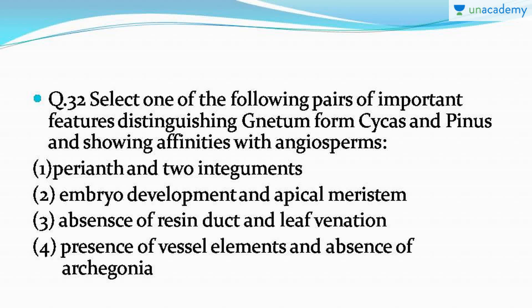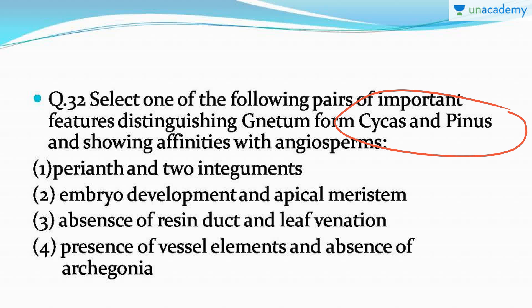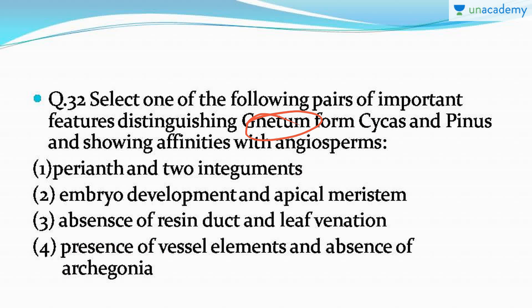Question number 32: select the pair of important features distinguishing Gnetum from Cycas and Pinus while showing affinities with angiosperms. The correct answer is option number four: the presence of vessel elements and absence of archegonia. Cycas and Pinus are gymnosperms — they lack vessel elements but have archegonia. Angiosperms have vessel elements but no archegonia. That's why Gnetum is a connecting link between angiosperms and gymnosperms.